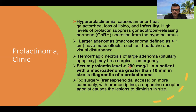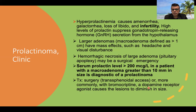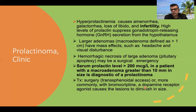Treatment includes transsphenoidal surgery, which is the treatment of choice. Apart from that, bromocriptine, a dopamine receptor agonist, is used. Dopamine is known to have an inhibitory action on prolactin release, so dopamine agonists are commonly used for the treatment of prolactinoma.